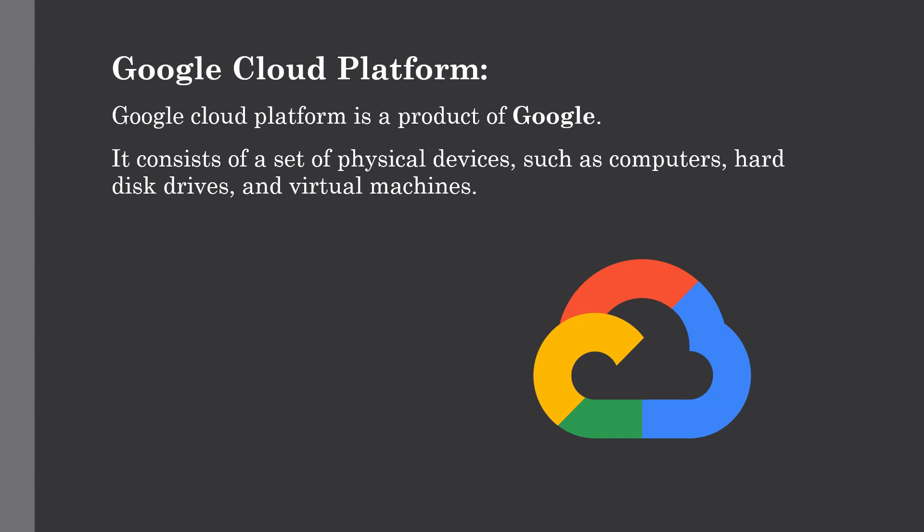The next one is Google Cloud Platform, known as GCP. The Google Cloud Platform is a product of Google and consists of a set of physical devices such as computers and hard disk drives, as well as virtual machines, which also helps organizations simplify the migration process. In terms of features, it includes various big data services such as Google BigQuery, Cloud Dataproc, Cloud Datalab, and Cloud PubSub. It also provides various networking services including Google VPC (Virtual Private Cloud), the Content Delivery Network, Google Cloud Load Balancing, Google Cloud Interconnect, and DNS.